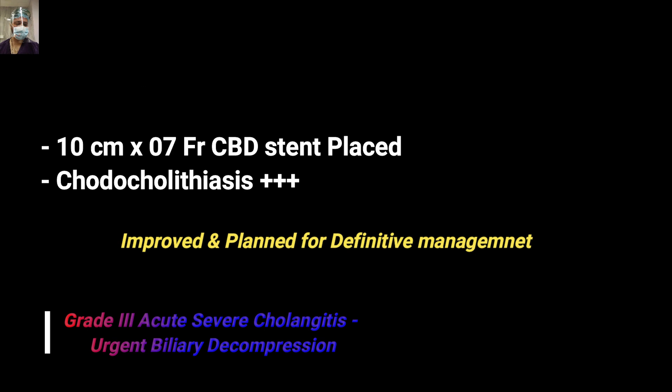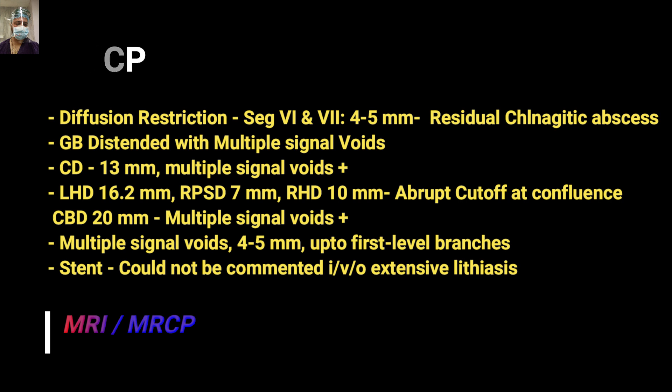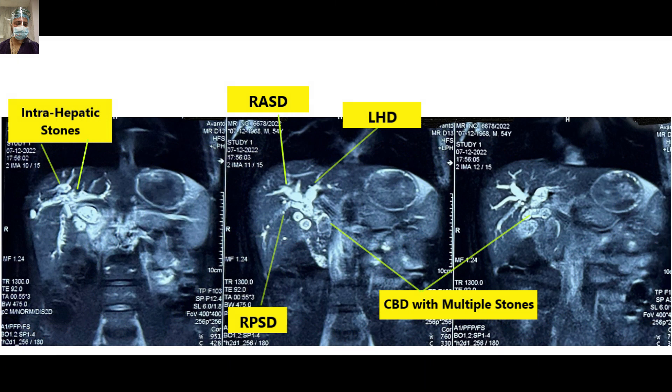The patient was then planned for definitive management. MRI MRCP images were suggestive of a cholangitic residual cholangitic abscess in segments 6 and 7, with an over-distended gallbladder and multiple signal voids. The cystic duct was also dilated measuring up to 13 mm. The left hepatic duct, right anterior sectoral duct, and right posterior sectoral duct were all dilated, measuring 16.2 mm, 7 mm, and 10 mm respectively, with a cutoff at the confluence. The CBD was hugely dilated at 20 mm diameter with multiple stones — multiple signal voids measuring up to 4–5 mm up to the first-level branches. The stent could not be commented upon on MRI due to the extensive stone load.